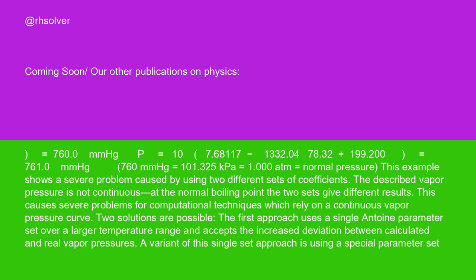760.0 millimeters of mercury. 760 millimeters of mercury equals 101.325 kilopascals equals 1.000 atm equals normal pressure.